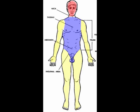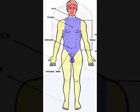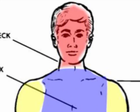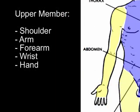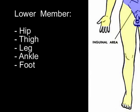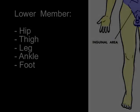The lungs, the heart, and the digestive system are found in the trunk. The second region comprises the head and neck — the brain, eyes, ears, mouth, pharynx, and larynx are found in this region. The third region — the arms and legs — are also called members. Each upper member includes a shoulder, an arm, a forearm, a wrist, and a hand. Each lower member includes a hip, a thigh, a leg, an ankle, and a foot.